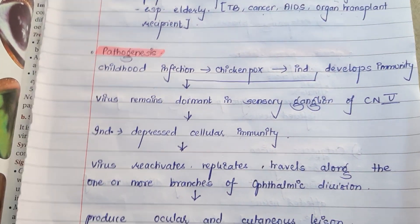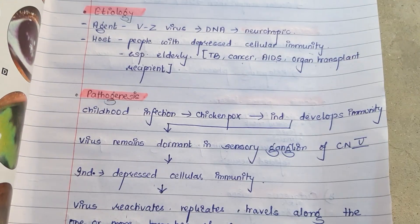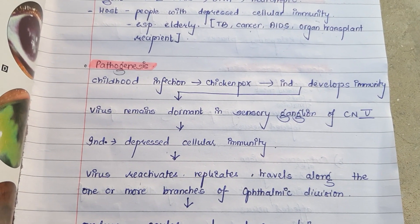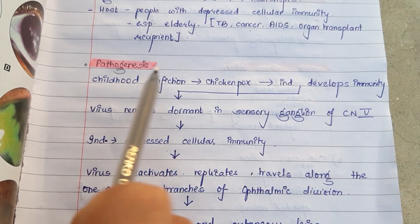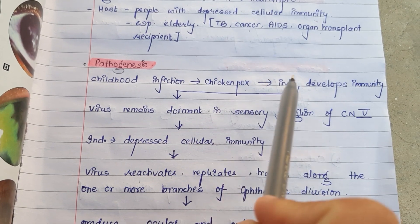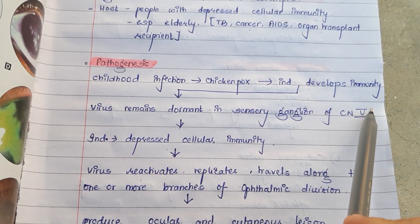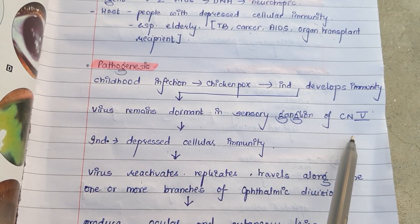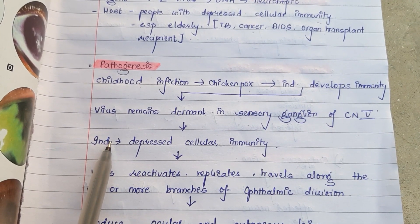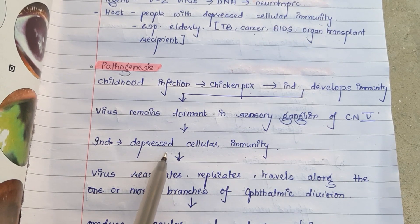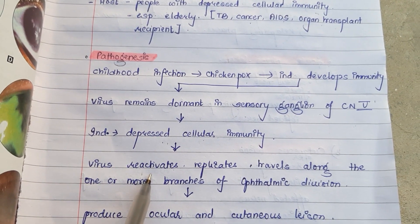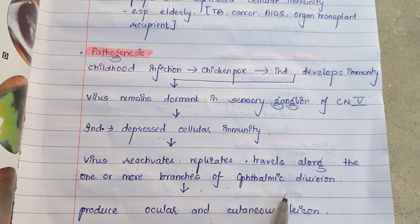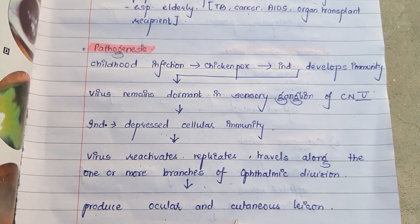Regarding pathogenesis, the infection is acquired in childhood in the form of chickenpox. The individual then develops immunity, and the virus remains dormant in the sensory ganglion of the trigeminal nerve. Whenever the individual's cellular immunity is depressed, the virus reactivates, replicates, and travels along one or more branches of the ophthalmic division, producing ocular and cutaneous lesions.